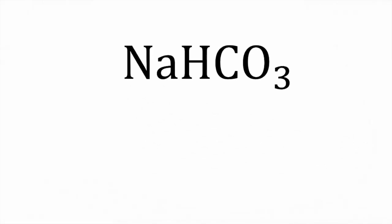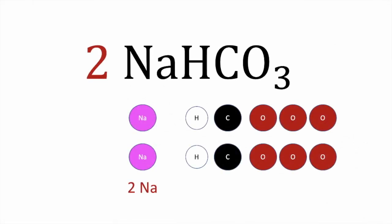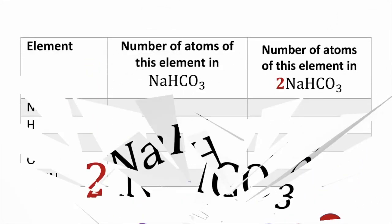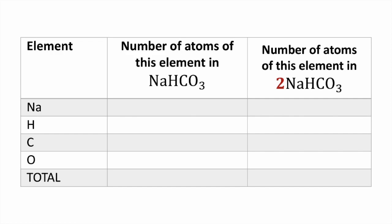You could draw the molecule and count the atoms — it helps to do it in color. Or you could use a table. In the left column, write out all the elements in your formula, then multiply each by two to get the number of atoms. Two sodium atoms, two hydrogen atoms, two carbon atoms, and three oxygens multiplied by two gives six oxygen atoms. Adding all of those up, we get 12 atoms.